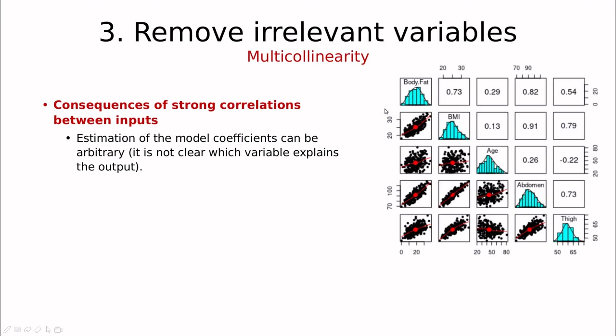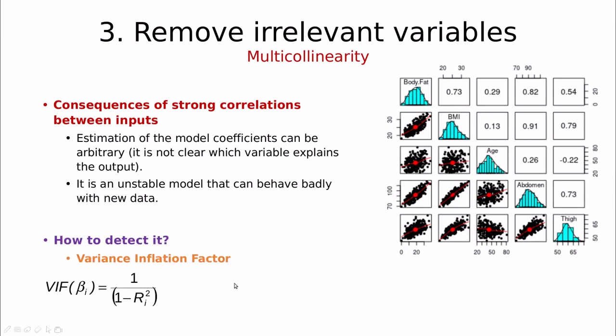So how can you reduce the instability of the model? One trick to do that is called variance inflation factor and the idea is the following: we can compute the correlation between each predictor and the other predictors. For instance you can do that for thigh versus all the predictors and then you define this parameter which basically ranges from 1 to infinity.